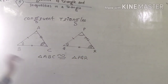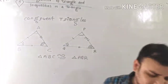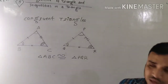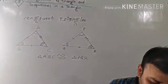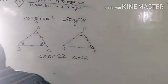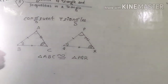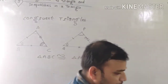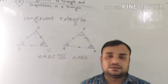Now dear students, congruent triangles are exactly identical. That means if two triangles are congruent, then both triangles are identical.